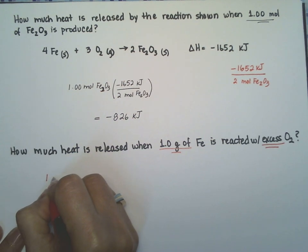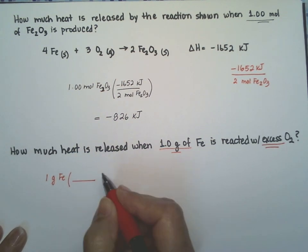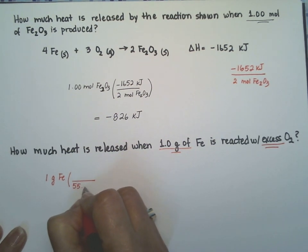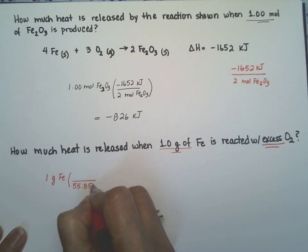Let's start with one gram of iron. The atomic weight of iron is 55.85 grams per mole.